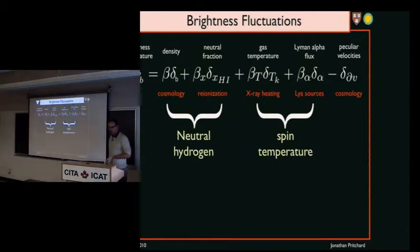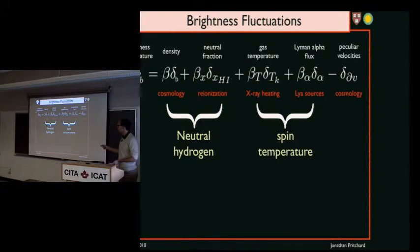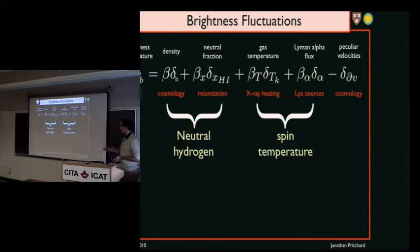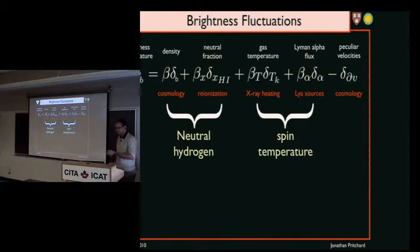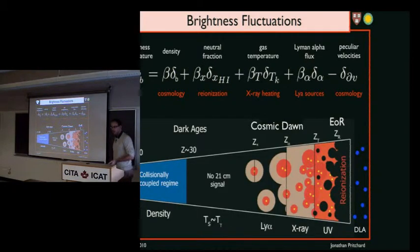Now for the global signal's complement: one can also think about fluctuations in that signal. As in the case of the CMB, most of the information is in fluctuations. One can decompose 21-centimeter brightness fluctuations into several different terms coming from the density, the neutral fraction, the gas temperature, and the Lyman-alpha flux. This is really telling you about how much neutral hydrogen there is at a given point and what the spin temperature is. If you could measure and separate these different terms, you could learn about different aspects of cosmology and astrophysics. We appear to be lucky that as a function of time, these different bits of physics become important at different times based on their energy efficiency.